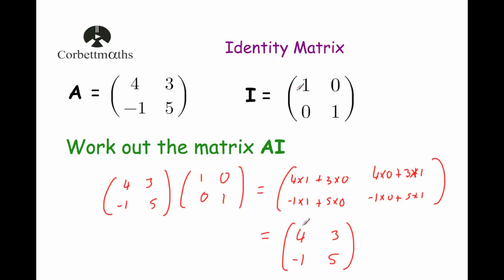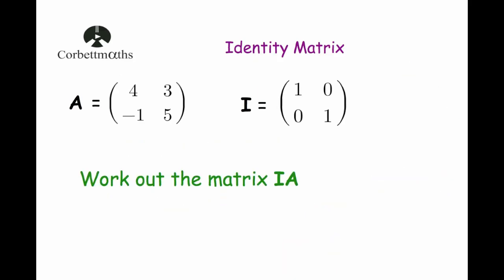You may notice that result is just equal to A. So that means we can say that A times I is just equal to A. If we multiply the matrix A by the identity matrix, we get the matrix A again. Let's have a look at what happens when we multiply the matrices the other way around — instead of A times I, let's see what happens when we do I times A.